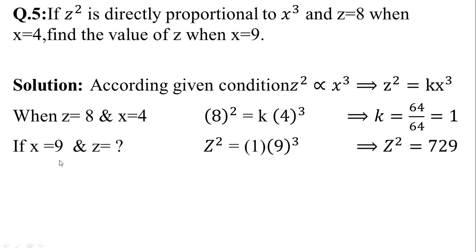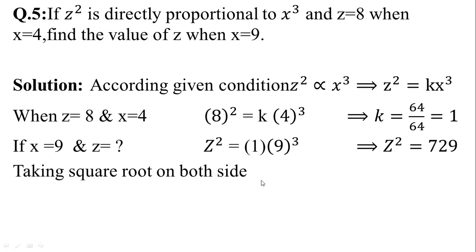If x is equal to 9, find the value of z. We know that z squared is equal to 1 times 9 cubed. Taking the cube of 9: 9 cubed is equal to 729. Now taking the square root on both sides, z squared equals 729. Since 729 is 27 squared, taking the square root gives z is equal to 27.